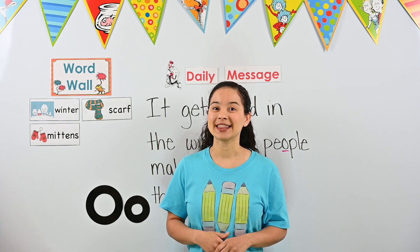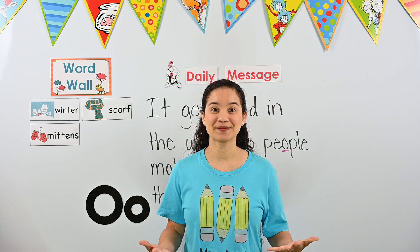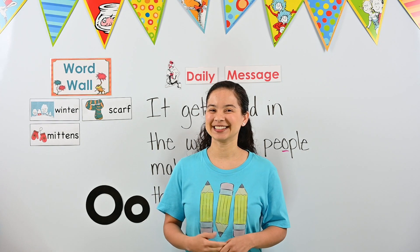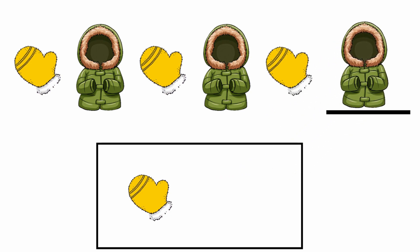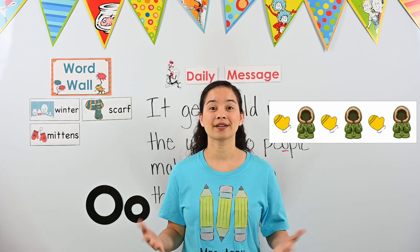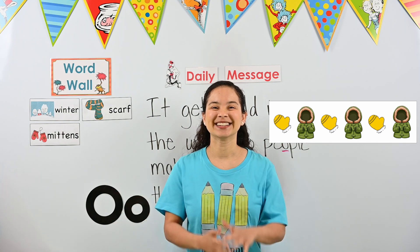This time you're going to have to finish the pattern — can you help? Let's look at our pattern: a mitten, a coat, and then a mitten and a coat, and a mitten. What comes next — is it a mitten or a coat? After the mitten comes a coat. Let's put the coat on the line. Now we have our pattern: mitten, coat, mitten, coat, mitten, coat. Great work, friends. Let's try another one. A scarf, a hat, boots — a scarf, a hat — what comes next? After the hat, it's the boots. Let's put the boots on the line.